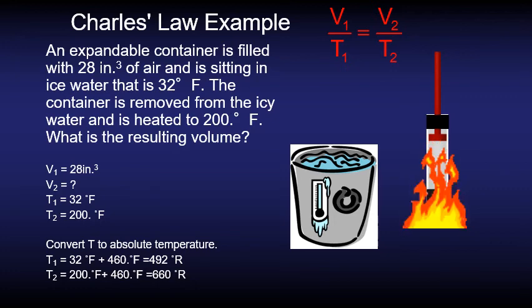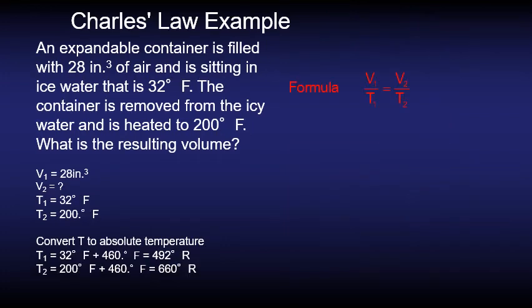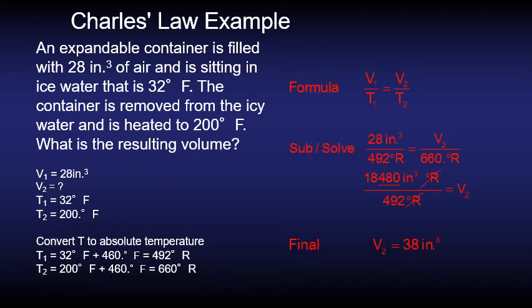So then we can take those converted temperatures that are now in Rankine and use them in Charles' law to figure out what the resulting volume will be. So we put all values into that equation and use the calculator and you should end up with the resulting volume 2 of 38 inches cubed. So looking back at our volume 1 it was 28 inches cubed and so the volume increased as the temperature increased which is what Charles' law suggested it would do.